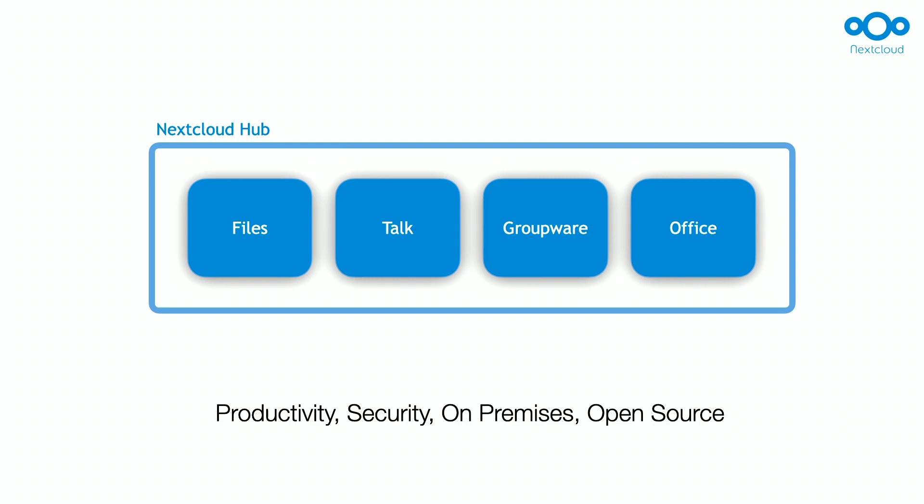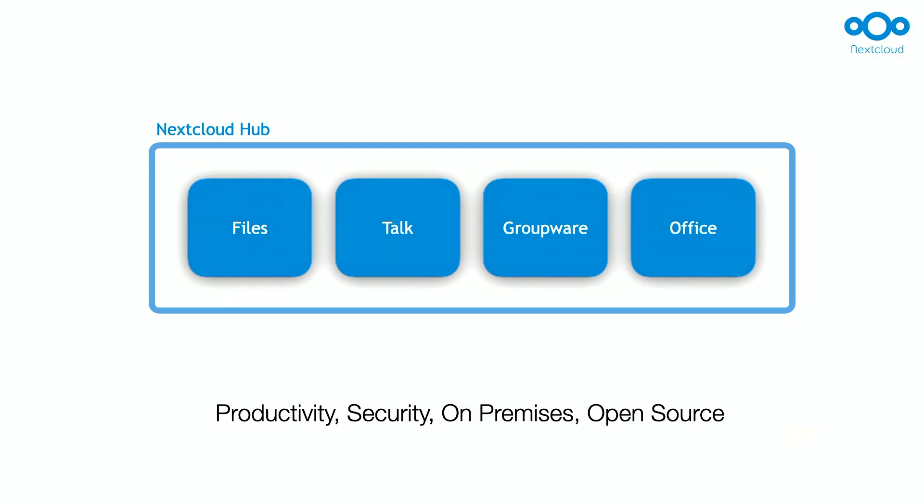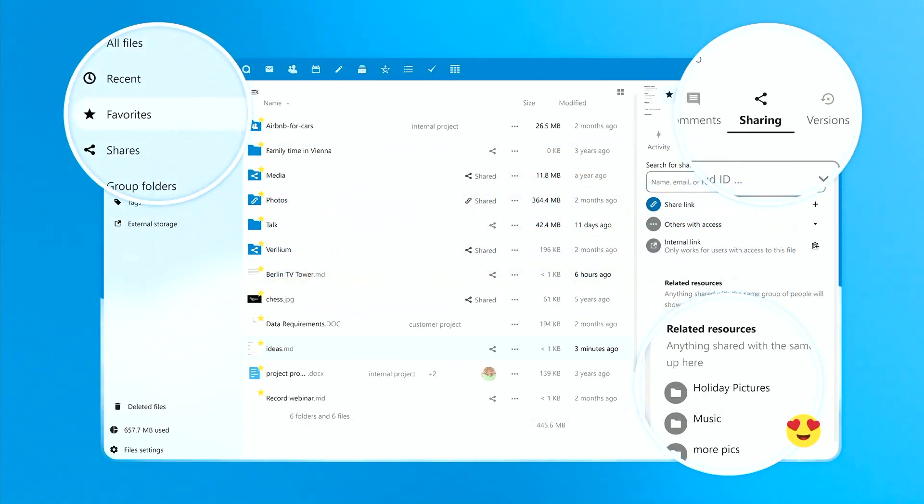You can go to our website, download all of that, put it on your Raspberry Pi, on your Linux server, and you have your local collaboration suite with all the features. You can have your own group chats, your own video conferencing, mail, office document editing, and so on. Everything is open source and on-premise — that's what we do.